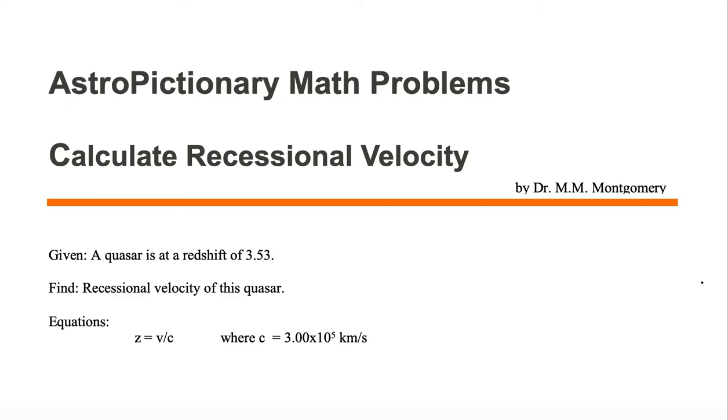We would like to calculate recessional velocity. We're given a quasar is at a redshift of 3.53. We would like to find the recessional velocity of this quasar.